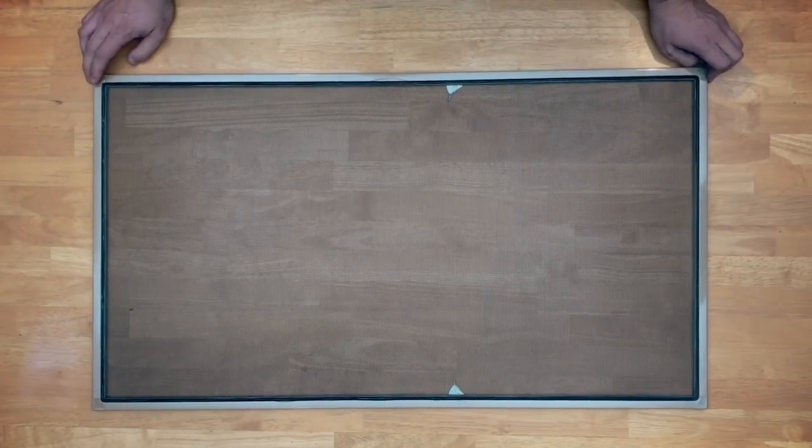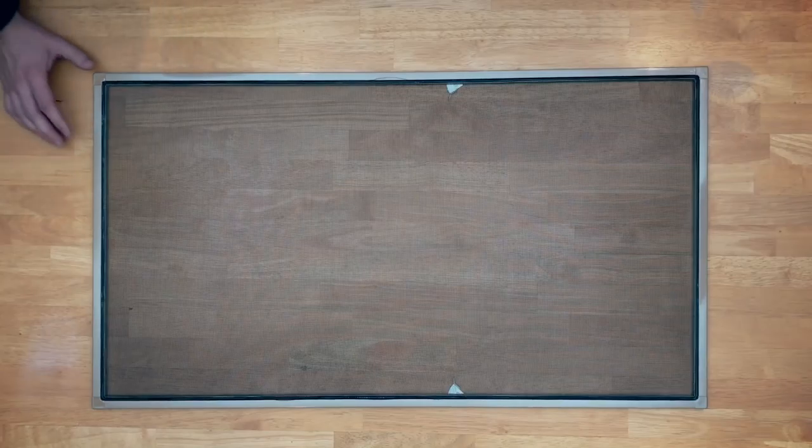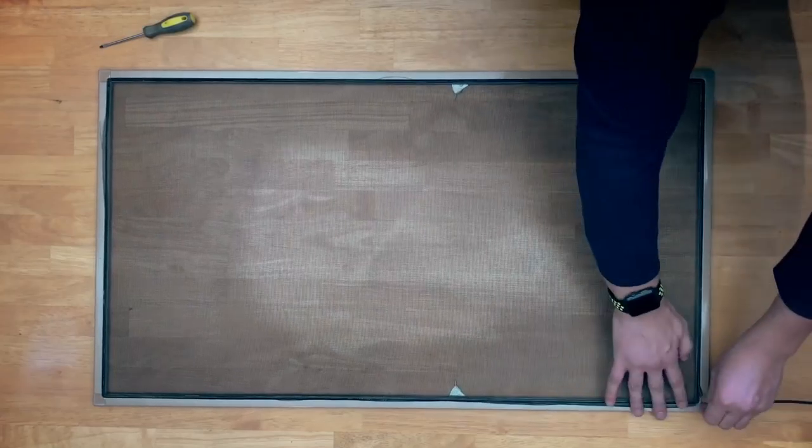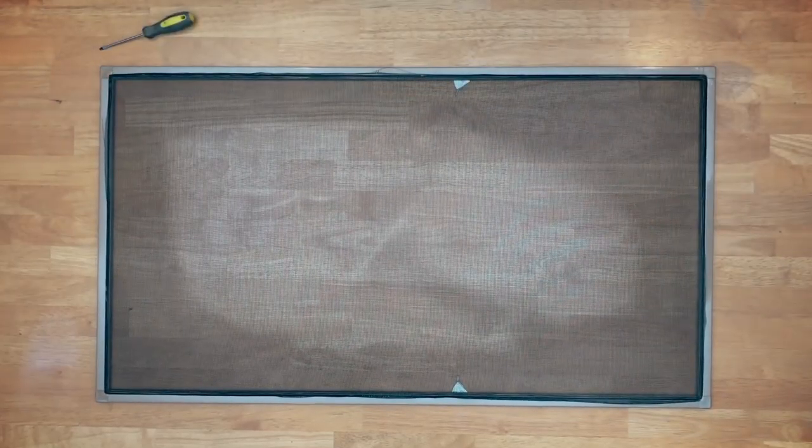First place the screen on a workbench with the grooves facing up so you can see the rubber spline material, and then basically use your flat head screwdriver, start in one corner and pry out your spline on all four sides of the frame to remove the screen.